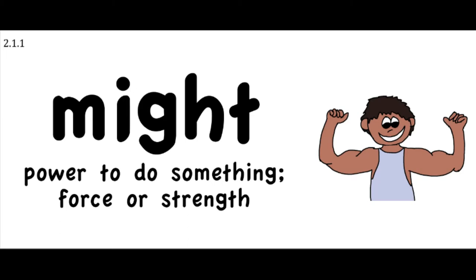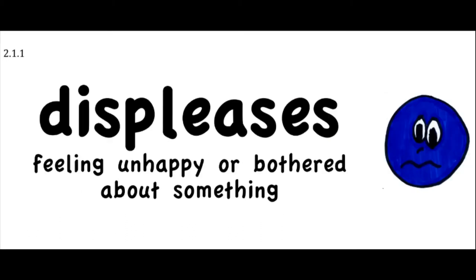Might means the power to do something — force or strength. For example, the boy tried to open the door with all his might, but it would not open. Displeases means to be unhappy or bothered about something. For example, it displeases the baseball players when their game is canceled because of rain. Displeases has an antonym — an antonym means the opposite. The antonym of displeases is pleases. The word pleases means that it makes you happy or something that you like. When we put 'dis' in front of a word, it means the opposite.